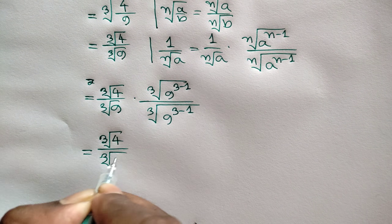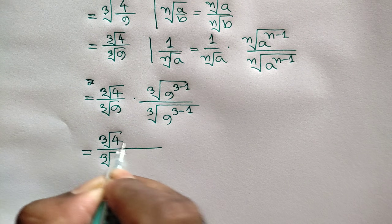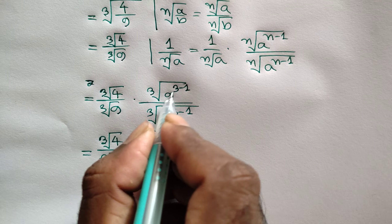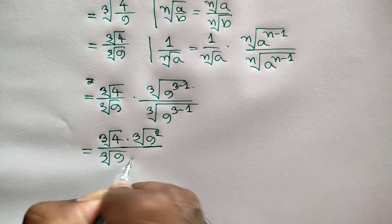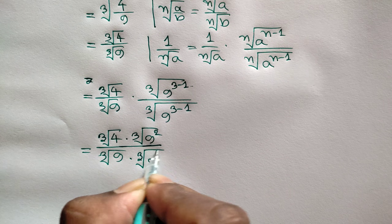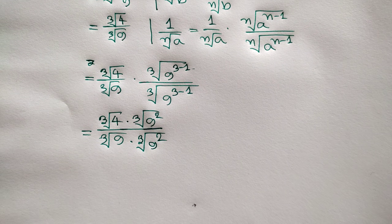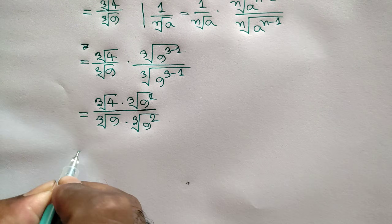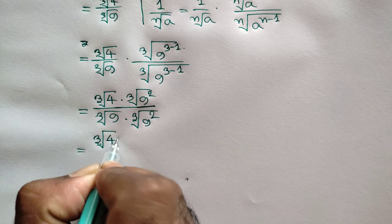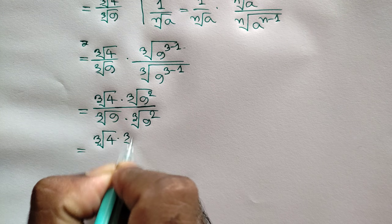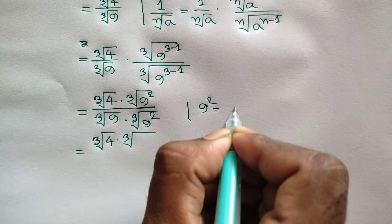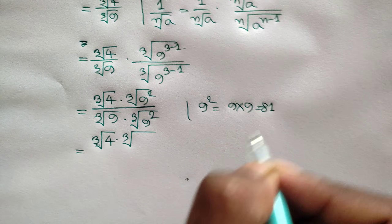We multiply by cube root of 9 to the power (3 minus 1), which is cube root of 9 to the power 2. This gives us cube root of 4 times cube root of 9 squared. We know that 9 times 9 is equal to 81.